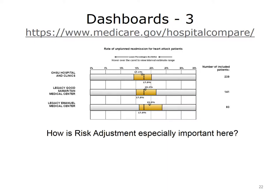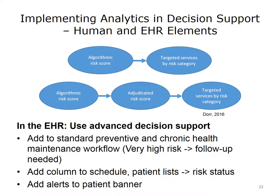Outcomes such as readmission also have another issue — think about why risk adjustment for patient factors would be especially important here. If you thought that the risk of readmission may vary widely between patients with heart attacks, you would be correct. Risk adjustment would allow fair comparisons between systems that attract very complex patients and those with more straightforward needs.